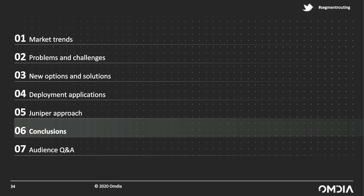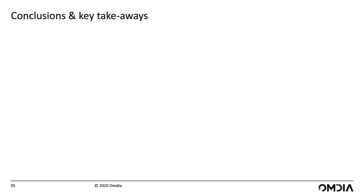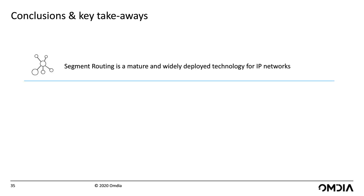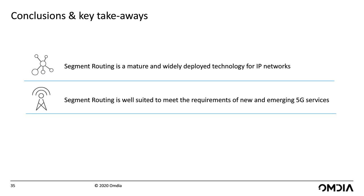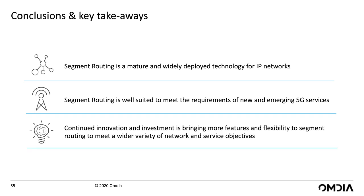Just a quick reminder to the audience — please enter questions into the Q&A console, as we're almost at that point in the program. A few key takeaways: first, segment routing today is a mature and widely deployed technology for IP networks — it is well-established and many in the audience have already deployed it. Second, segment routing is well-suited to meet key requirements of new emerging services including 5G, especially with respect to low-latency services and highly available, highly reliable services. Third, continued innovation and investment in segment routing is bringing more features, more flexibility, and more applicability, enabling network operators to meet a wider variety of network and service objectives.